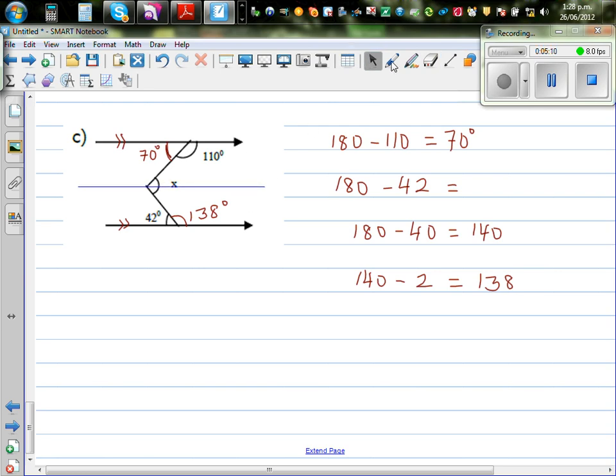So this is also parallel to this. If this is, can I see an alternate angle here? This is 70, so how much is this angle? Can you see a Z angle? So this would also be 70 degrees.